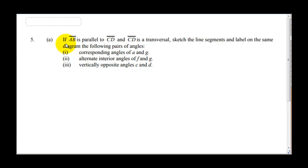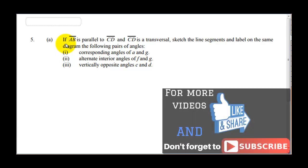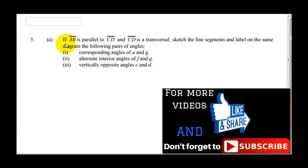If you're just joining us, don't forget to hit the subscribe button. Question 5 says: if line AB is parallel to line CD, and line CD is a transversal, sketch the line segment and label on the same diagram the following pairs of angles.